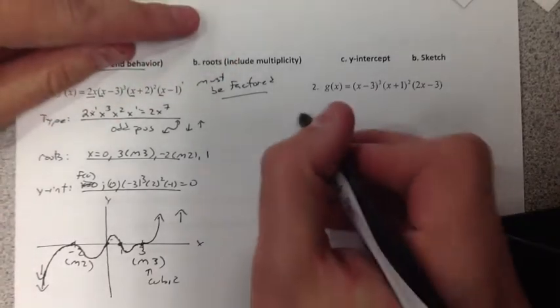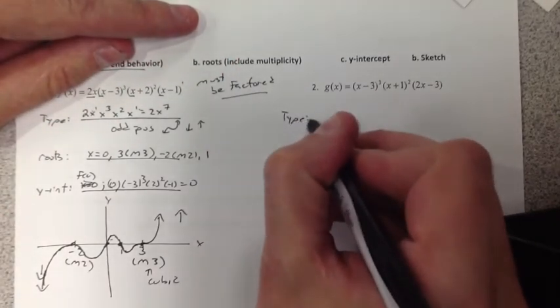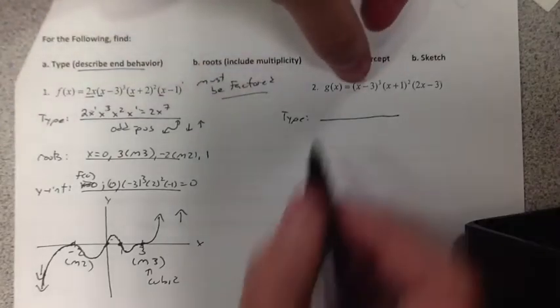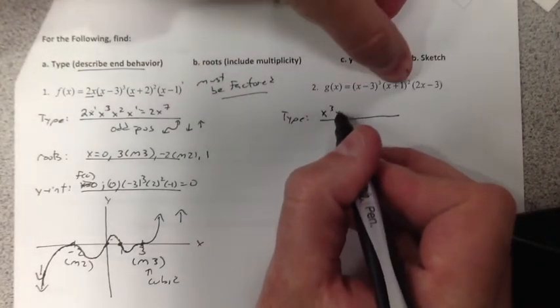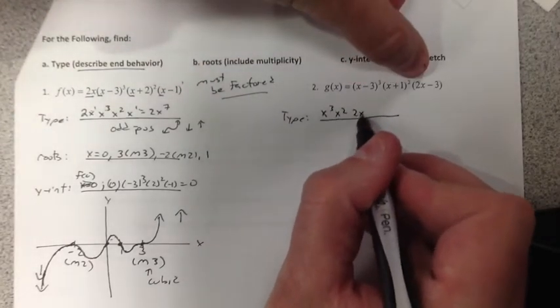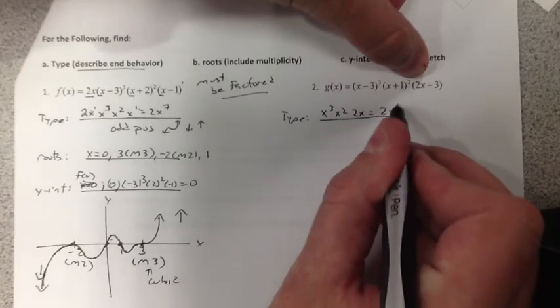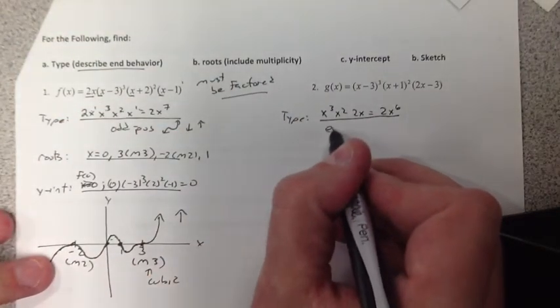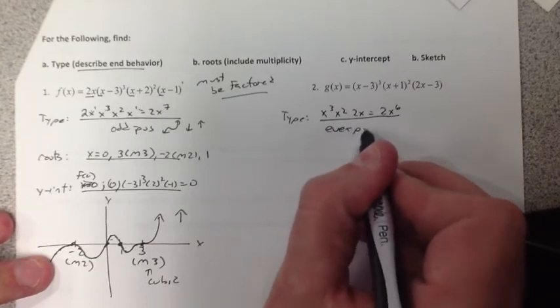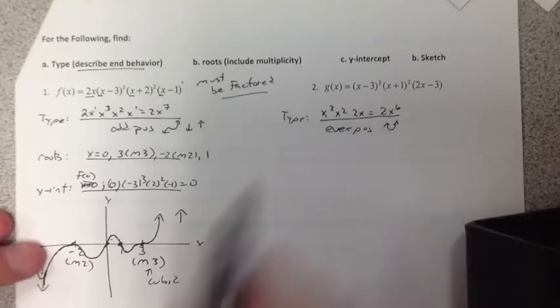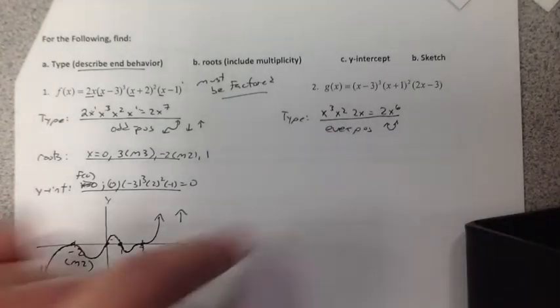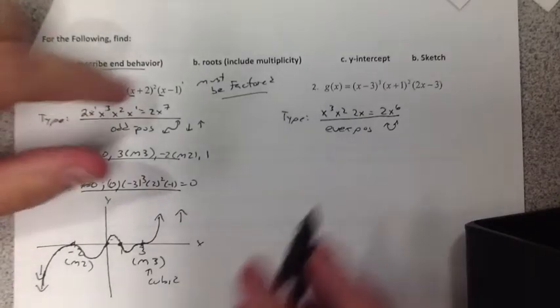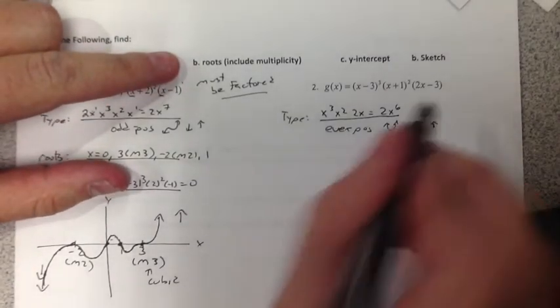Number 2, same thing. I get the type. Easy breezy. You can do this in your head. Look. x cubed, x squared, just 2x. This becomes 2x to the 6. This is even positive. It looks just like, I kid myself. It's a parabola-looking-like thing. So it starts up, ends up.